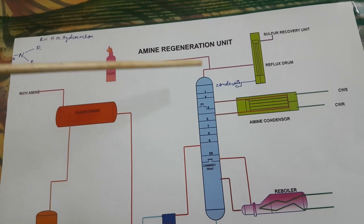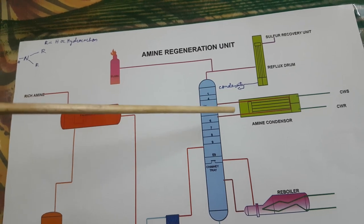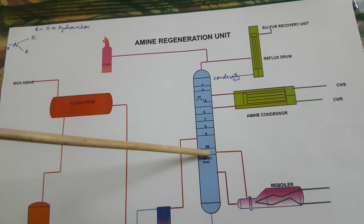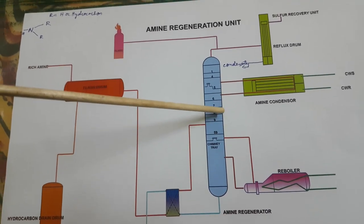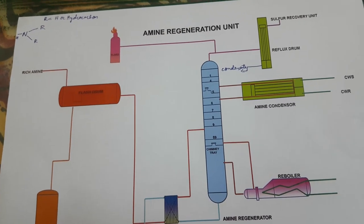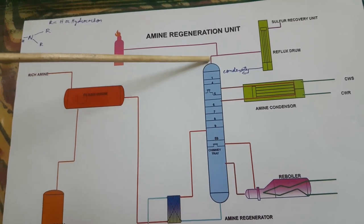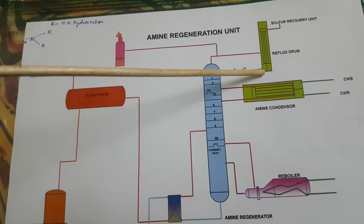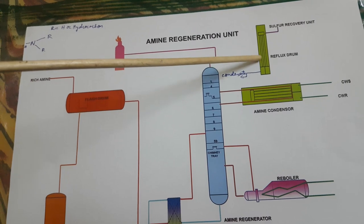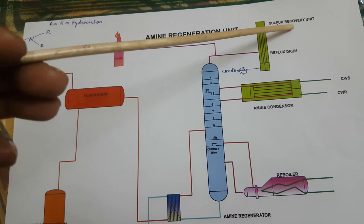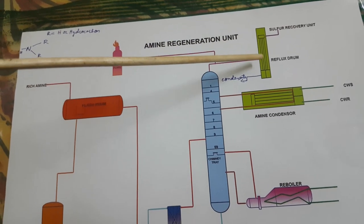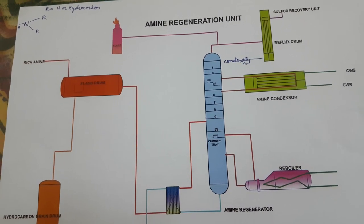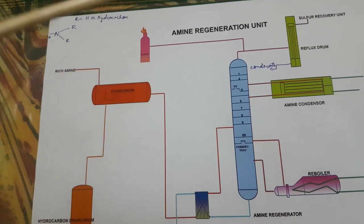Now let's go for the reflux drum. The function of the reflux drum is to remove condensate from the sour gas going to the sulfur recovery unit. When we heat the rich amine, sour gases get separated. The sour gas going overhead may carry some amount of amine, so it goes to the reflux drum where it flashes. The condensate is collected and sent back to the system, and the sour gas free from condensate is sent to the SRU. In the SRU, hydrogen sulfide is converted into sulfur, which is used for production of sulfuric acid, fertilizer, and many chemicals.